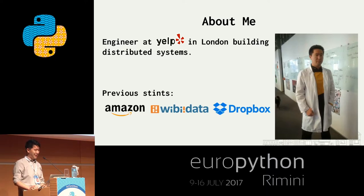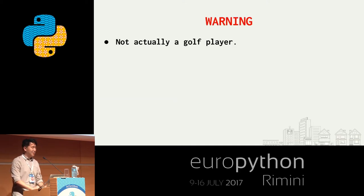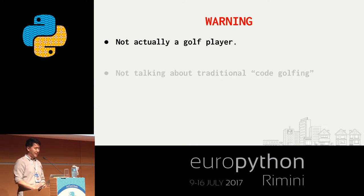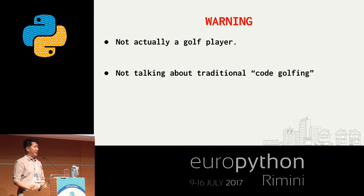Previously, I've been at Amazon, a startup called VB Data, and Dropbox. And I interned at Starfleet as a data scientist — you'll get the pun in a moment. A few caveats: I'm not actually a golf player, so my analogies may fall a little flat. I'm not talking about traditional code golfing in the way of maximizing every single character to produce a particular result — I find that tends to generate unreadable code.